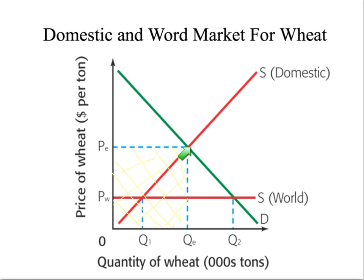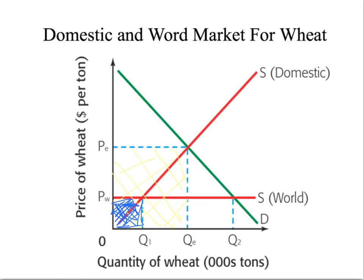They are not capable of producing wheat at these low prices. Only these domestic producers can participate in the marketplace given the new world market price. So U.S. producer revenue has dropped down to this square here of PWQ1.